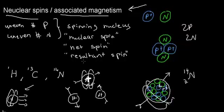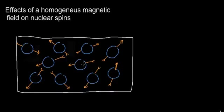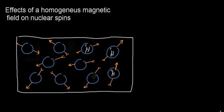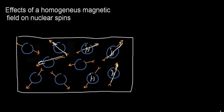Let's take the next baby step towards understanding NMR and talk about the effects of a homogeneous magnetic field on nuclear spins. Here is my biological sample. I'll stick with hydrogen as my example — we have hydrogen nuclei all spinning, and we can call these spin vectors because they are vectors pointing in totally random directions.